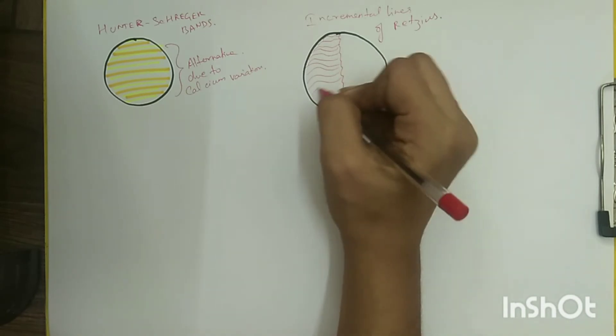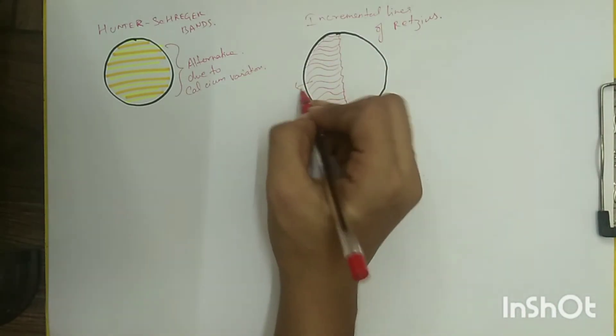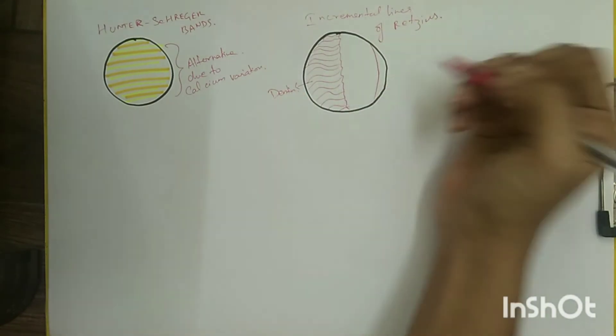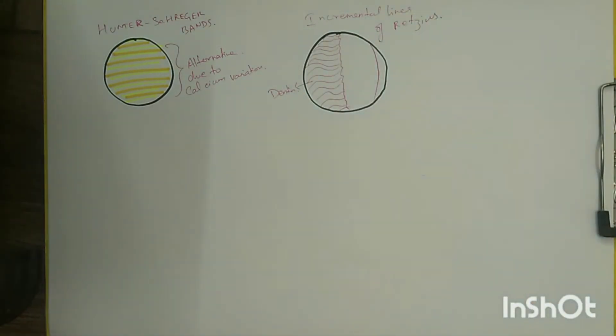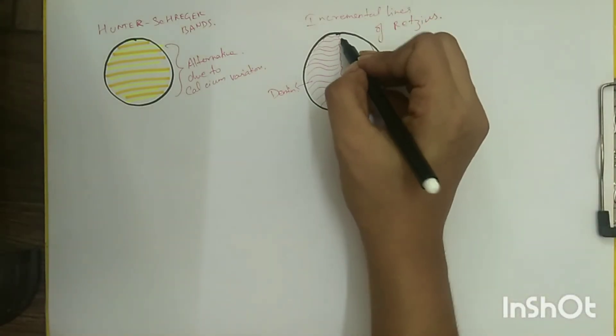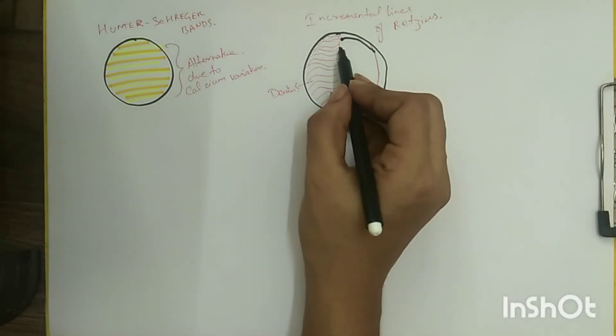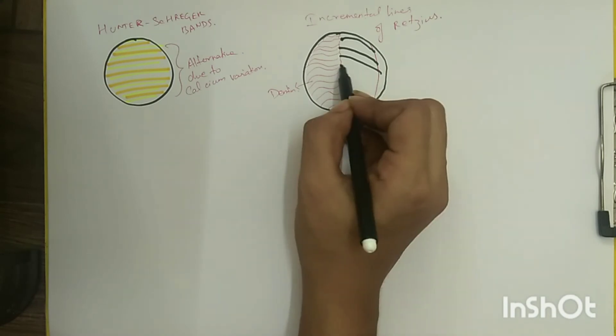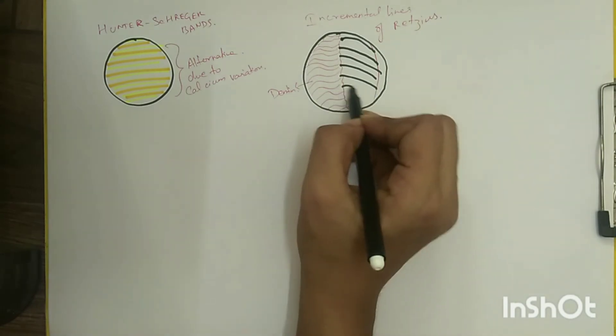In longitudinal cross section, these are seen extending from the dentino-enamel junction to the outer surface of the tooth in an upward and outward direction. They are more numerous and close together in the cervical region.